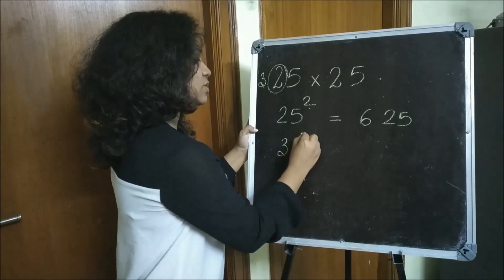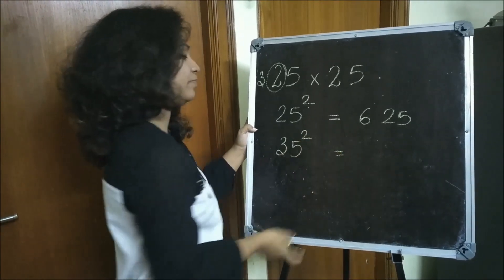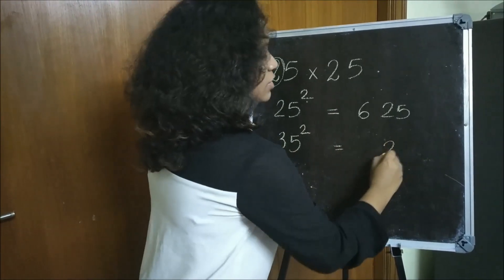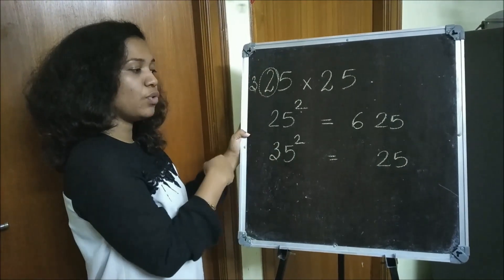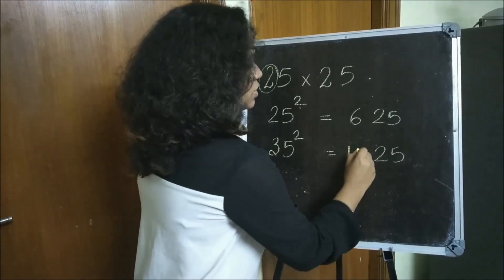Now let's see what is 35 squared. 5 fives are 25 and 3 into 4 is 12, so 1225.